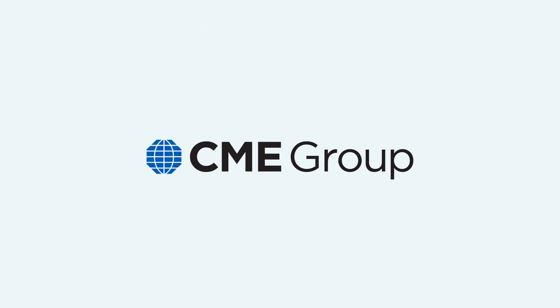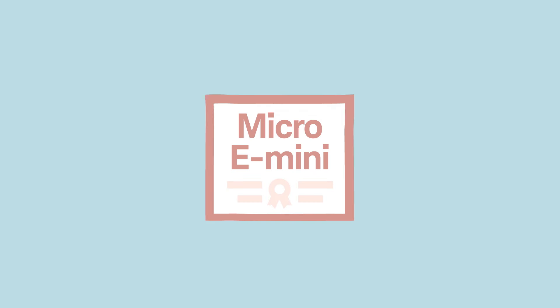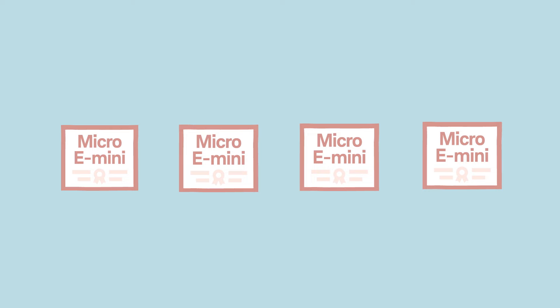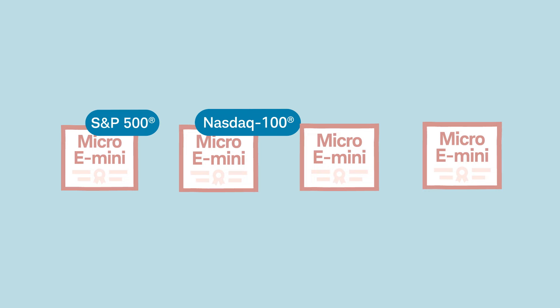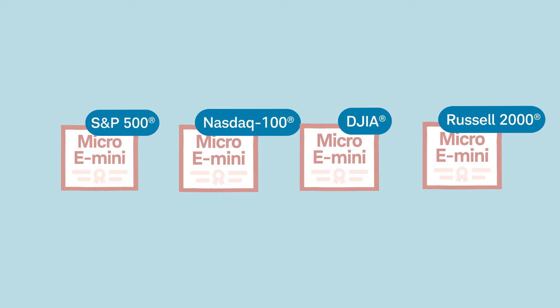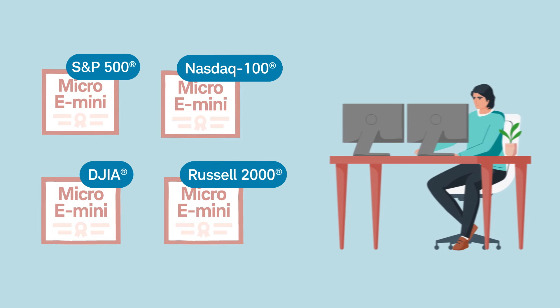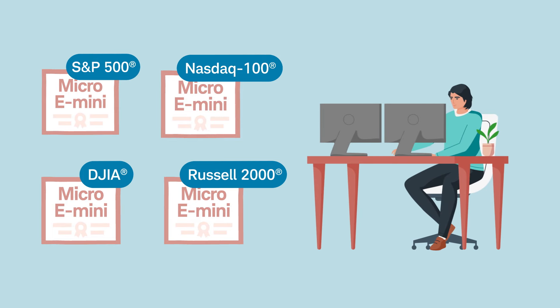In May 2019, the CME Group launched Micro E-mini futures contracts on four major U.S. stock indices – the S&P 500, NASDAQ 100, Dow Jones Industrial Average, and Russell 2000. These micro contracts provide futures traders another way to trade the U.S. stock market.